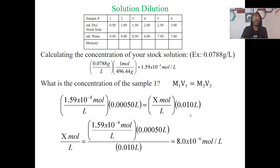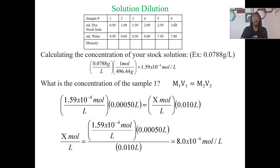So once I have all of my values in the equation — I know M1, I know V1, I know V2 — I need to solve for M2. I divide V2 to isolate M2, giving me M1 times V1 over V2. When I multiply and divide, I see that for sample one the molarity is 8 × 10⁻⁶ moles per liter. And this is for sample one. So now, if you want to give it a shot, see if you can find samples two through six.